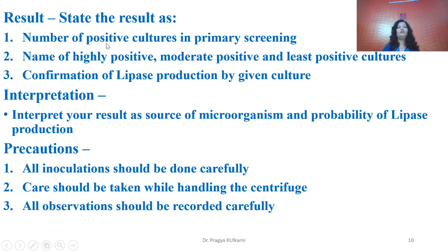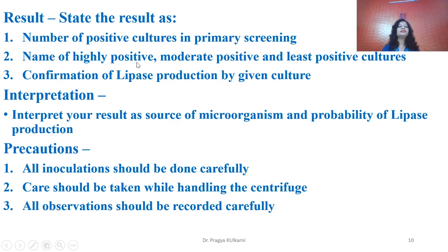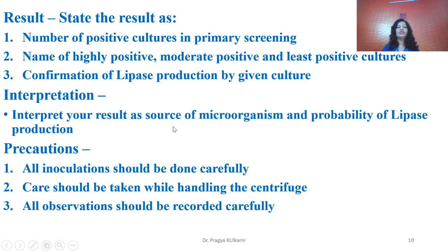Depict your results as the number of positive and negative cultures from primary screening. Then identify which cultures are highly positive, moderately positive, or least positive. After salting out and confirmation, indicate which culture gives a confirmed positive lipase production test. Interpret your results by stating the source of microorganism isolation and concluding that those microorganisms are highly potential for lipase production.